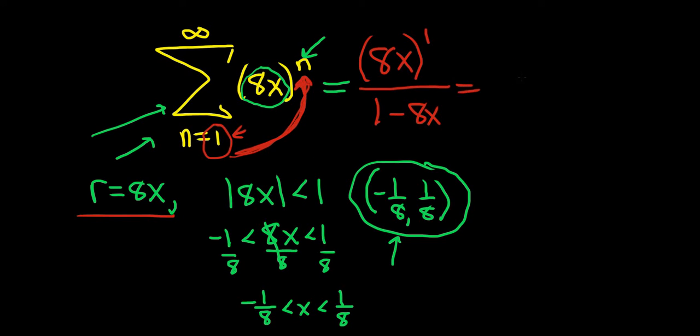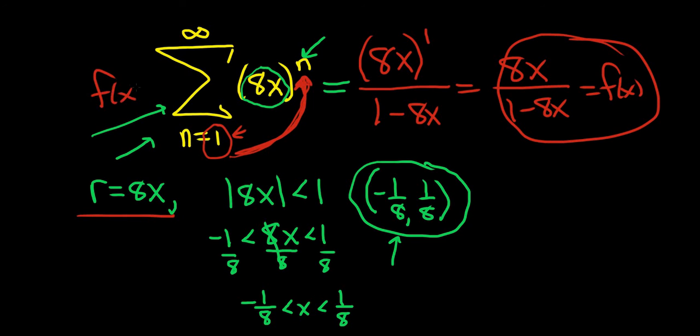So this would be 8x over 1 minus 8x. This is actually a function—this is f(x). Your series can be written as a function. The domain of this function—you can think of it that way.